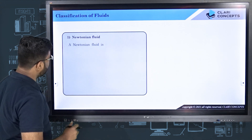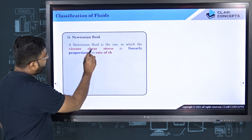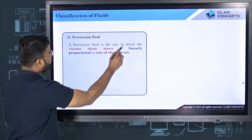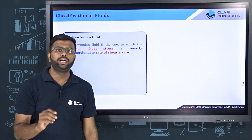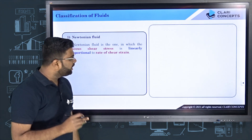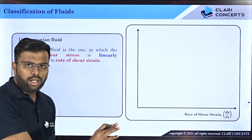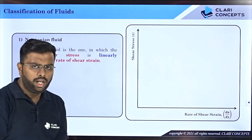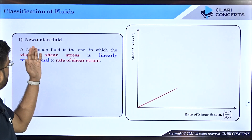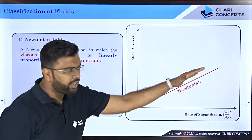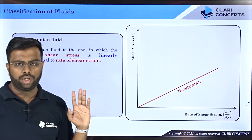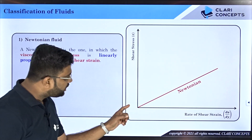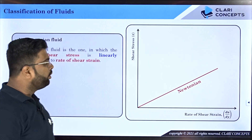A Newtonian fluid is one in which the viscous shear stress is linearly proportional to the rate of shear strain. If you draw the graph of shear stress versus rate of shear strain, you will observe that for this kind of Newtonian fluid the graph is a straight line passing through the origin.